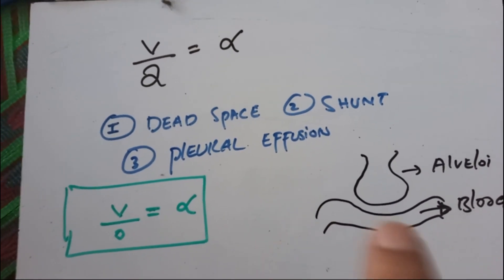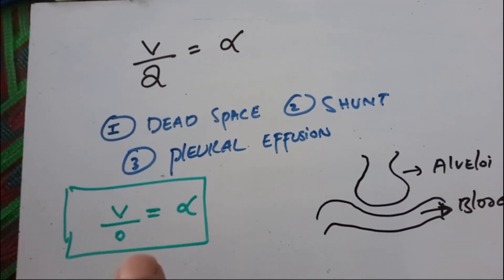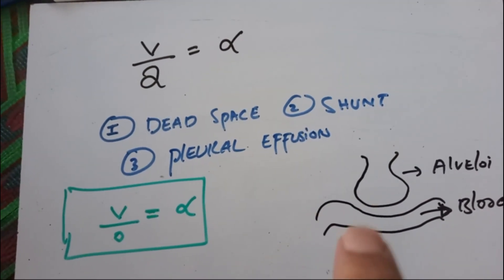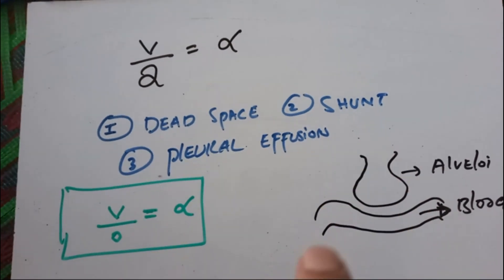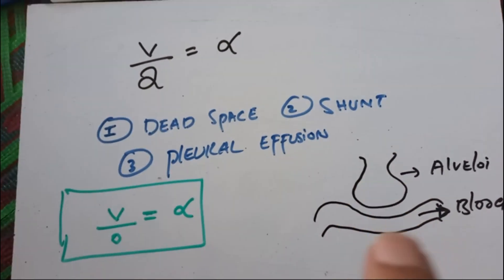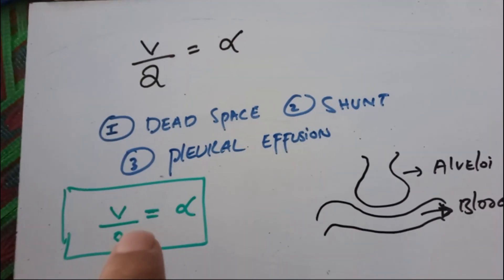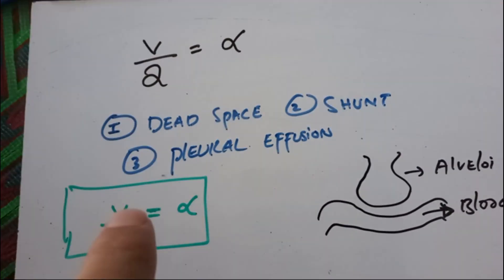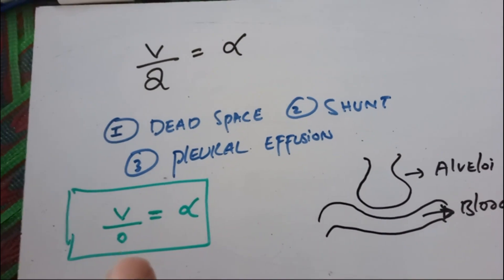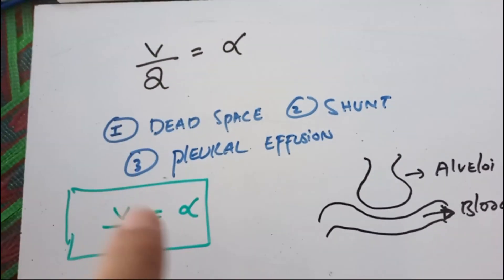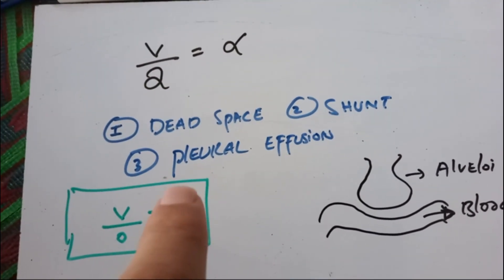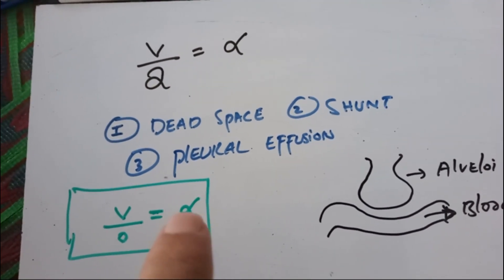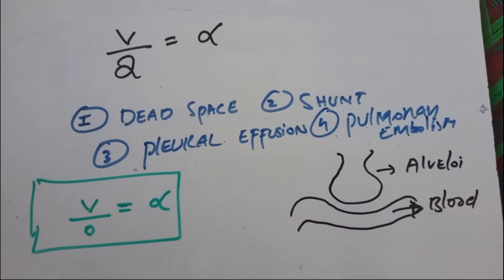If Q is 0 — meaning no blood is flowing to the respective alveoli — then whatever the amount of V, anything divided by zero becomes infinity. This is a typical example of pulmonary embolism. So V/Q = infinity is the characteristic of pulmonary embolism.